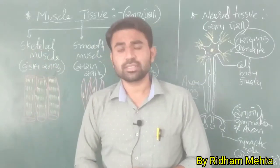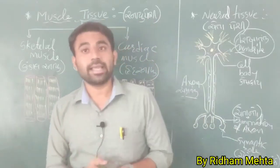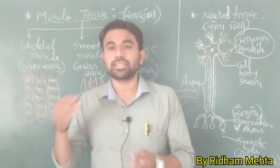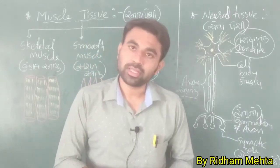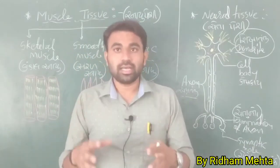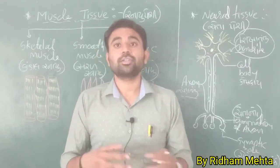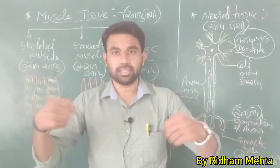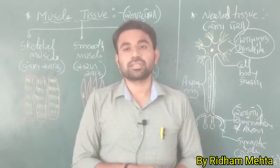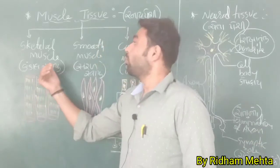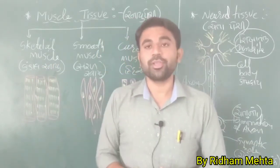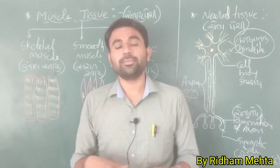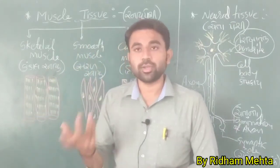The first type is skeletal muscles. According to its name, skeletal muscles are attached with your skeleton — that is, attached with bones. They are helpful in the movement of your desire, meaning you can move them as you wish. Because of this, they are also known as voluntary muscles, regulated by the central nervous system and the voluntary centers of your brain.